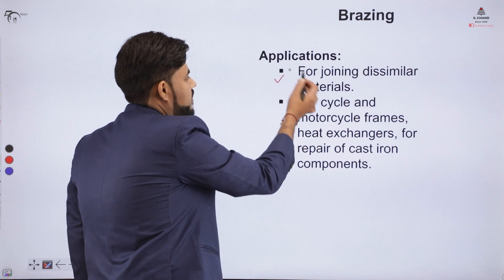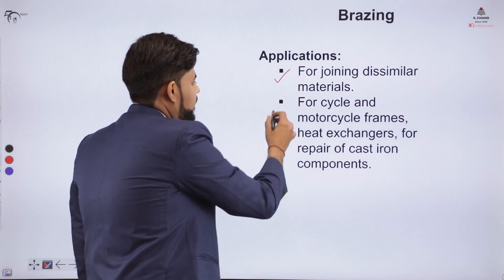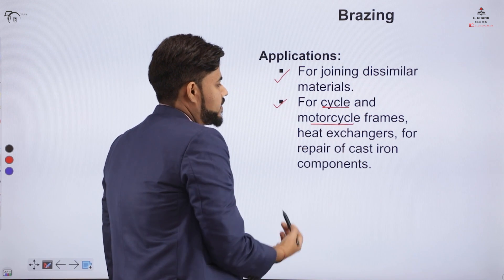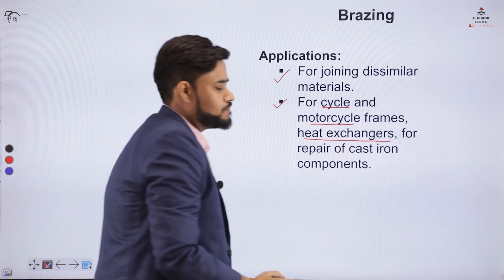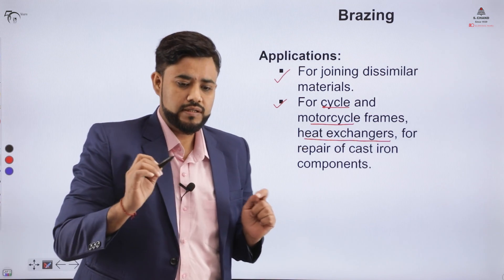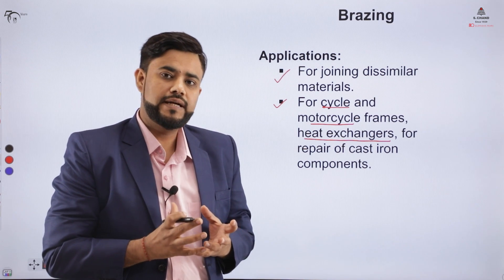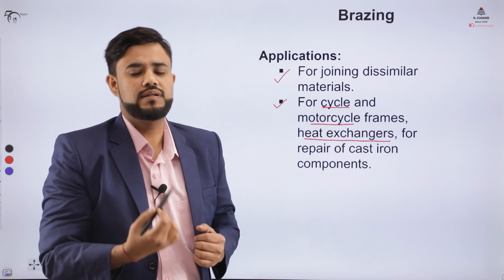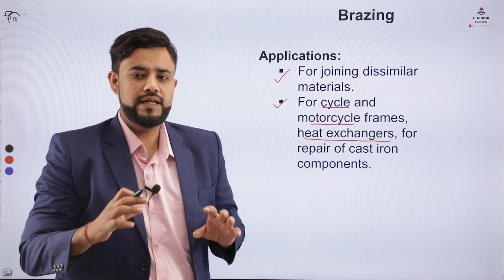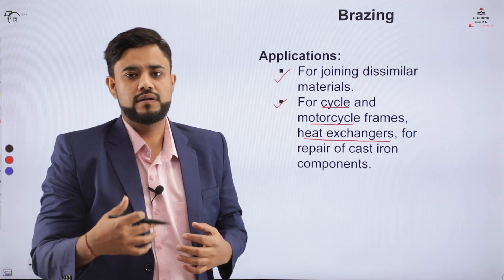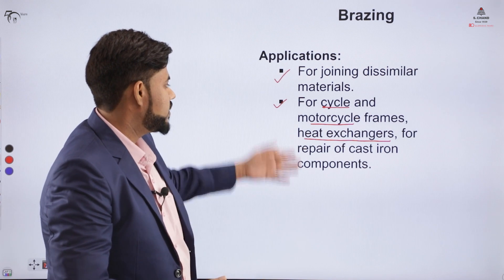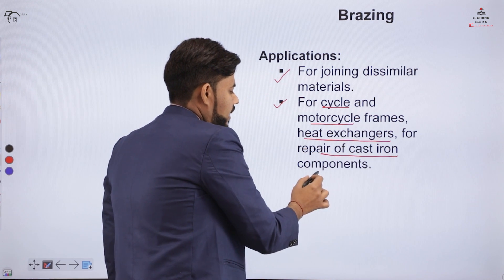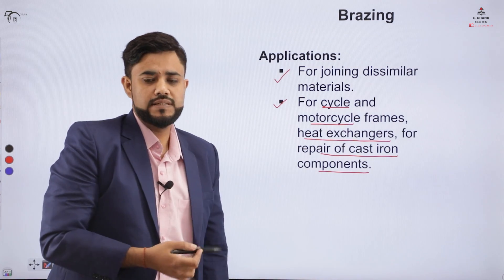Applications of brazing include: joining similar metals, maintenance or repair works on cycles or motorcycle frames, joining heat exchangers — where continuous joining of cylinder surfaces inside the heat exchanger is required so that heat is not released during operation — and repair of cast iron components.